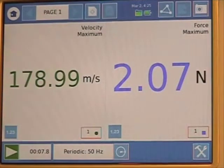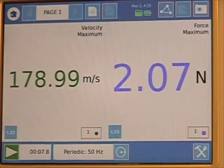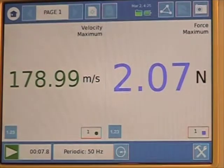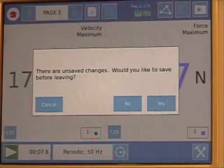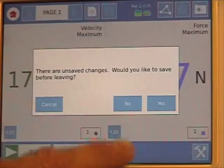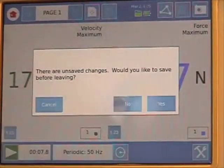If at any time during the building of your experiment, you get to a point where you are having problems changing the values, you can always press the home icon at the top of the screen, and it will allow you to go back to the very beginning and start over.